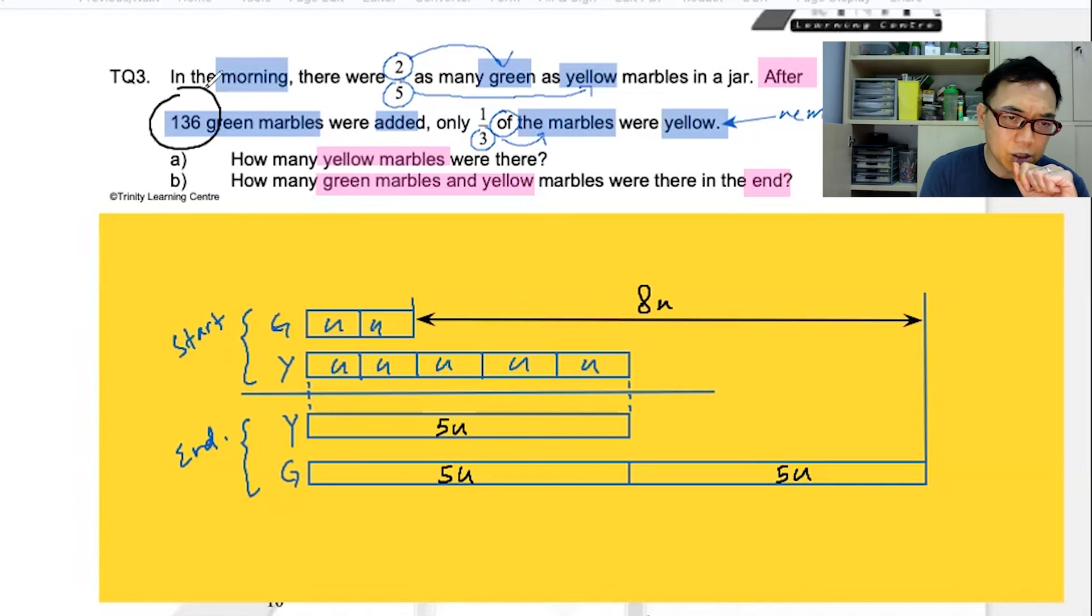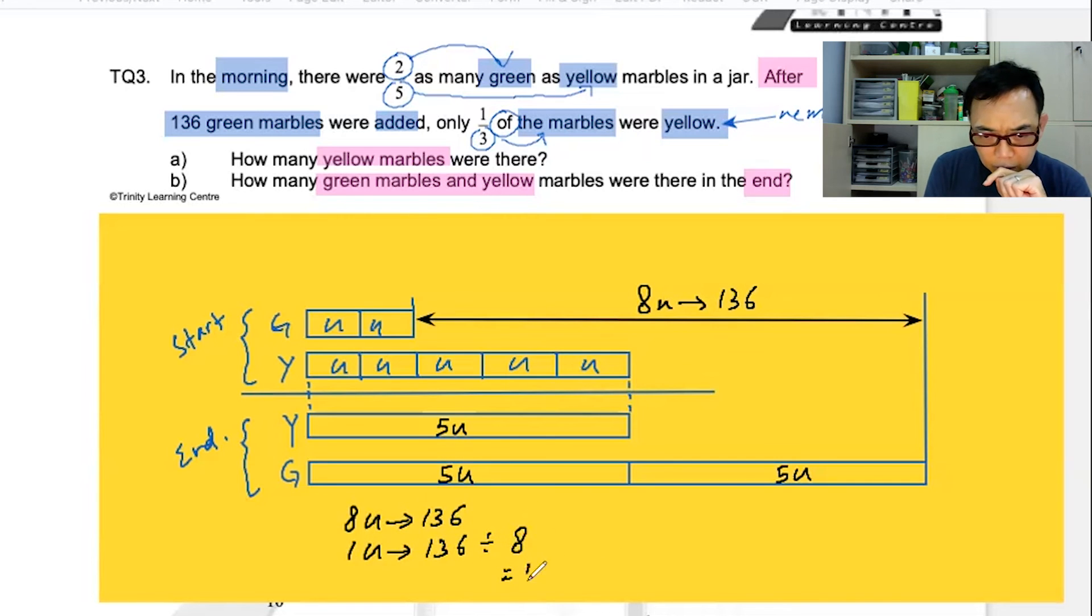The question says that 136 green were added. That means this is 136, right? So, if eight units is 136, one unit is 136 divided by eight. And you will get 17.